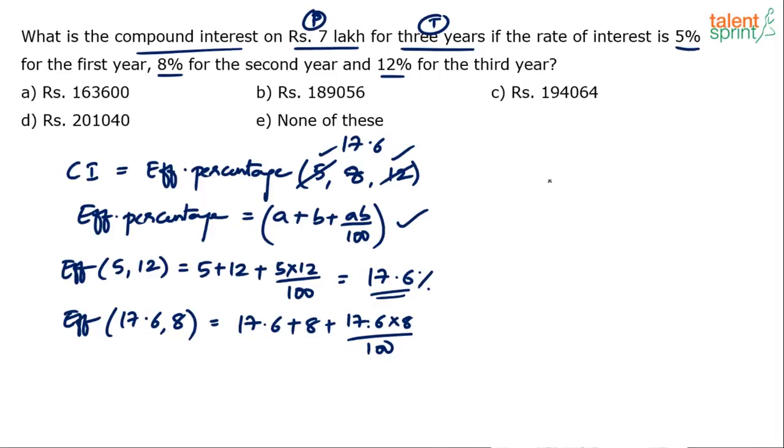You have to use P into 1 plus R by 100 whole to the power of T minus P. Or rather in this case, you have to use P into 1 plus R1 by 100 into 1 plus R2 by 100 into 1 plus R3 by 100 minus P. You can try the formula. Formulas are available to all of you. But this definitely is a better way in my view. I mean, these are the only two steps. Find out the overall percentage, then take that percentage on 7 lakh. You will get the answer.